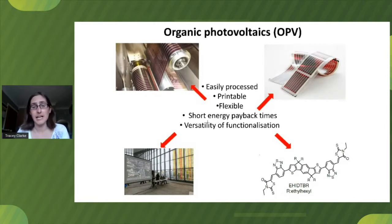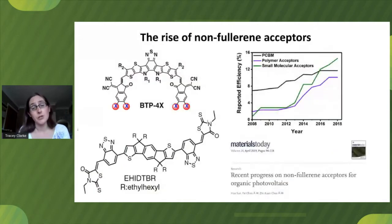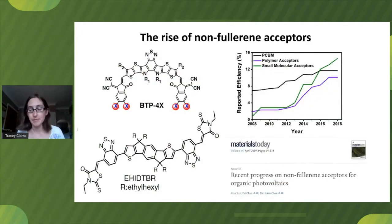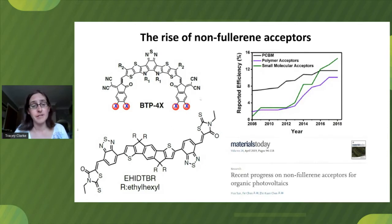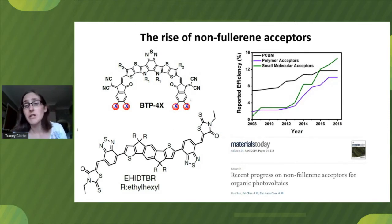Organic photovoltaics have been undergoing a bit of a renaissance recently, largely due to the rise of non-fullerene acceptors. Fullerenes such as PCBM have seen their device efficiencies stagnating in recent years, but just in the last several years, non-fullerene acceptors such as the molecules shown on the left have essentially produced a meteoric rise in OPV efficiencies, as you can see on the graph on the right.